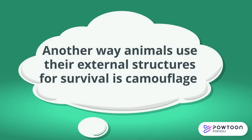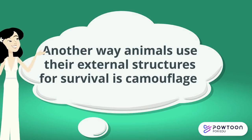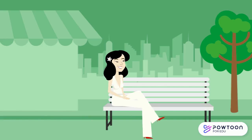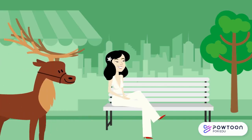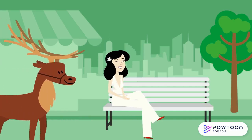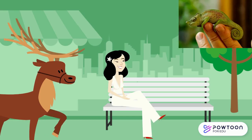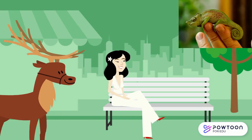Another way animals can use their external structures to survive is by using camouflage. Animals often share colors with their environment. Here in Utah, we see deer everywhere, but where they are most camouflaged is in the mountains. Some animals like chameleons can even change colors to match their environments.